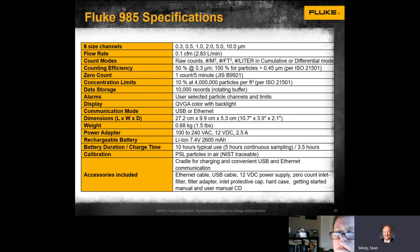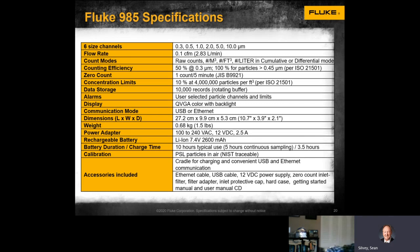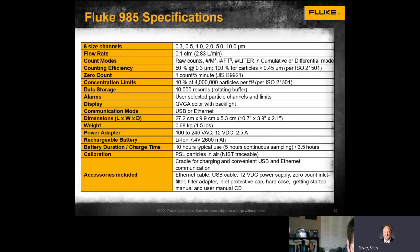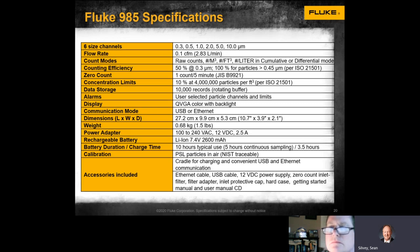Here are the specifications for the 985. The six size channels allow you to see up to six different sizes simultaneously. It has a good flow rate, and you can view counts as cumulative or differential. The unit also features data storage and alarm settings. It is lightweight — you can carry it into different environments, set it up, run it, and get measurements. Battery life is 10 hours typical, and it comes with a base so users can set it up and leave it running in an environment.